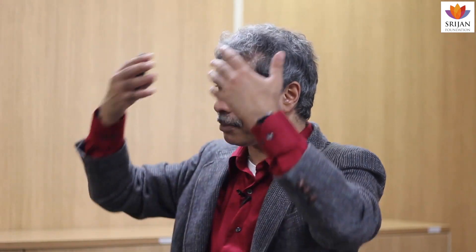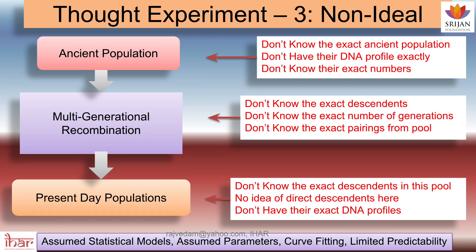I hope I have given you a flavour for the mathematical issues and technological issues. I am deconstructing the research methodology and saying there are problems everywhere. You cannot take these results and start doing things. They use assumed statistical models, assumed parameters, do some curve fitting — there is limited predictability with these things. On the other side, this is the admixture problem.